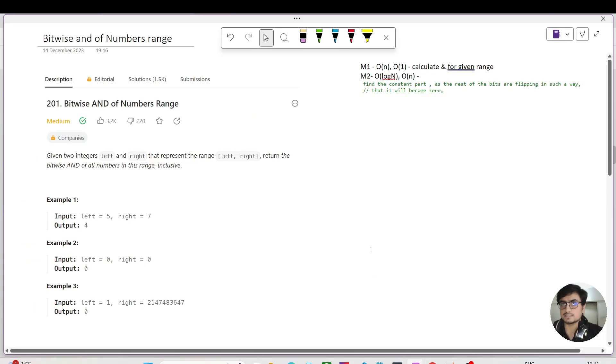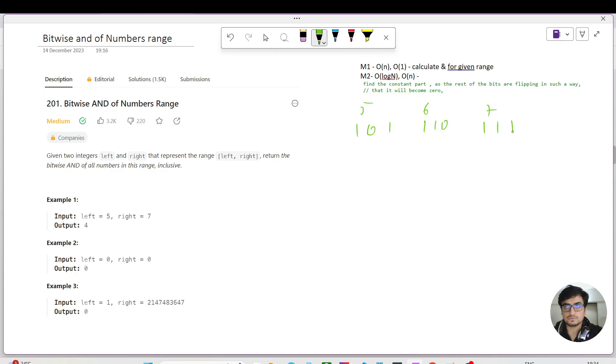Let's understand the input and output first. For left equals 5 and right equals 10, the output is 4. Let me write the binary representation: 5 is 101, 6 is 110, and 7 is 111. We need to return 5 AND 6 AND 7. If we do 5 AND 6, we get 101 AND 110 which gives 100. Then AND with 7 (111) gives 100, which is 4. This is method one, the brute force approach—just doing what the question asks.